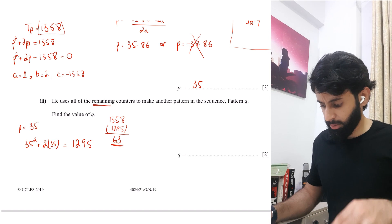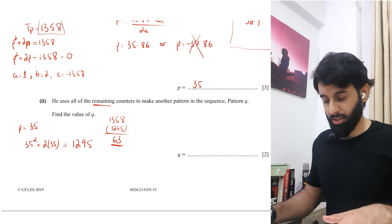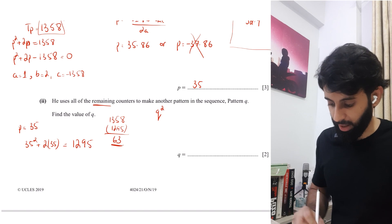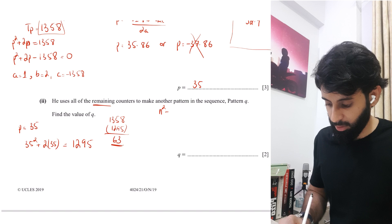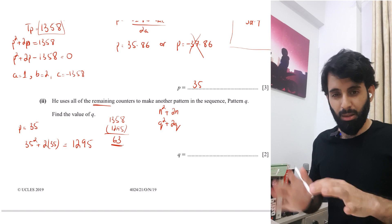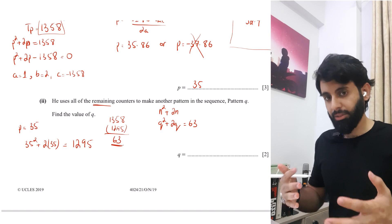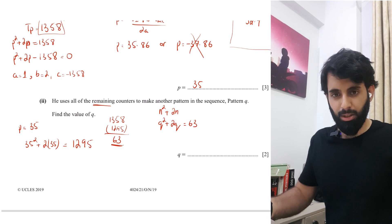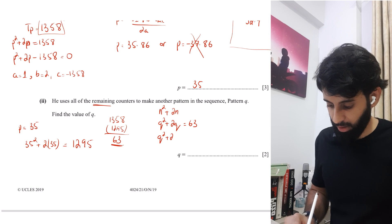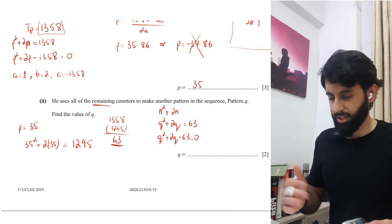Okay. Now he's, what exactly is he doing? He's making another pattern in the sequence, which is pattern Q and pattern Q takes up 63 counters. According to the question, we have to find out the value of Q. Okay. So Q square, so basically we have N square plus 2N, right? So Q square plus 2Q will give me the number of counters I need to make pattern Q, which is basically equal to 63. Okay. So we're sort of reverse engineering here. We have, we know the number of counters just like we did previously. We need to know what pattern we can make from these number of counters. So let's write this nicely. Q square plus 2Q minus 63 equals to zero.